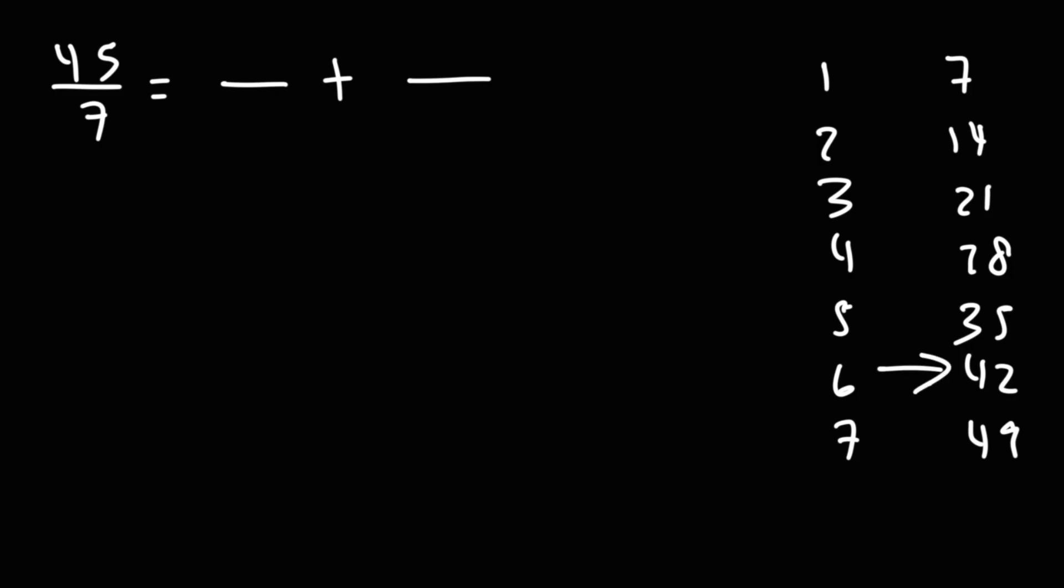Let's try one more example. 45 over 7. So what two numbers should we break down 45 to? Let's write out the multiples of 7. So notice that the highest multiple of 7, just under 45, is 42.